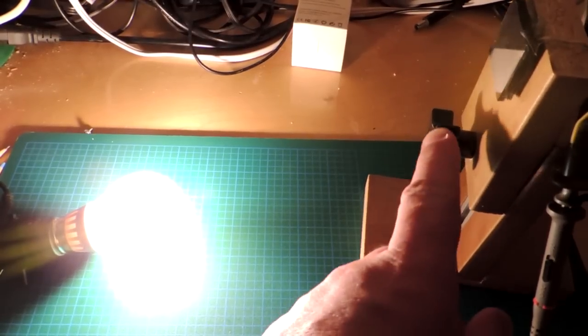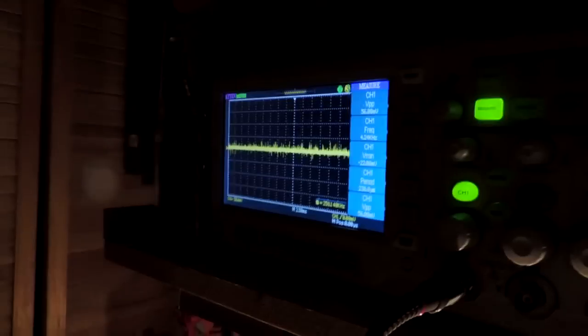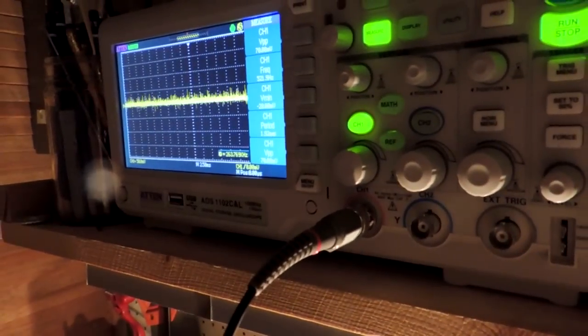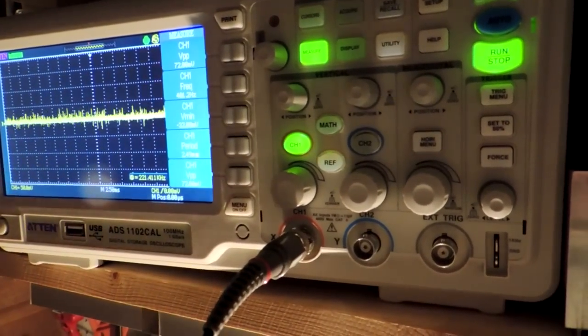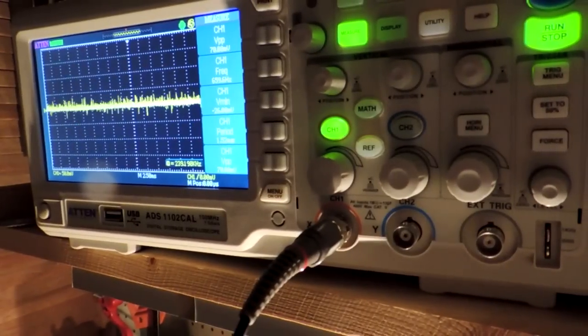Okay, flicker test. A solar cell and of course the bulb lighting up the solar cell. All the other lights are turned off. And when I look at the output of the oscilloscope I can see essentially no flicker. So a no flicker bulb. Interesting.